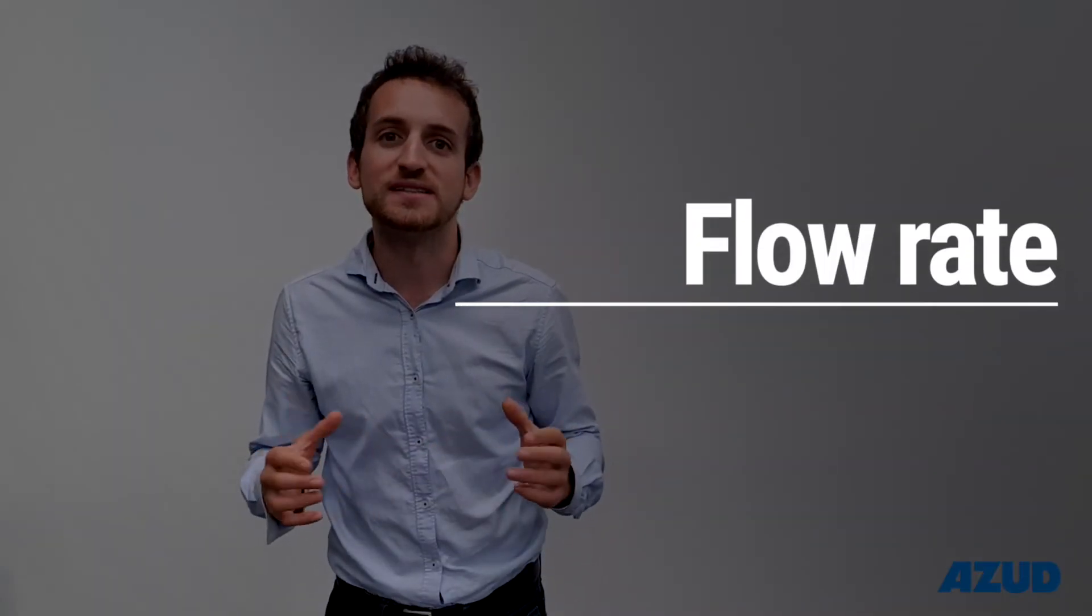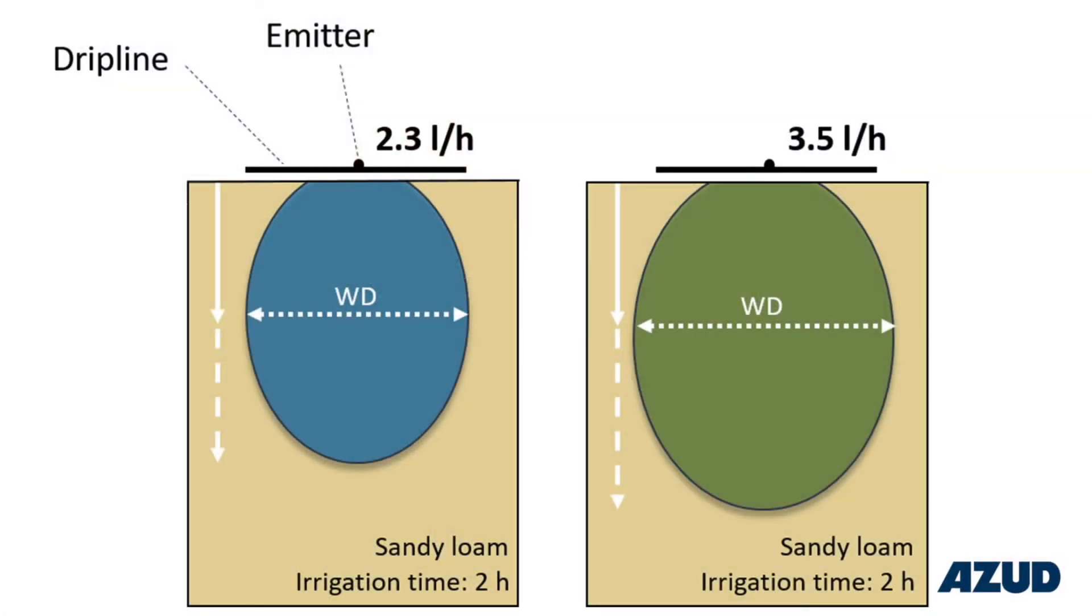Regarding the flow rate, the higher the flows, the bigger the size and the volume of the wet bulb.